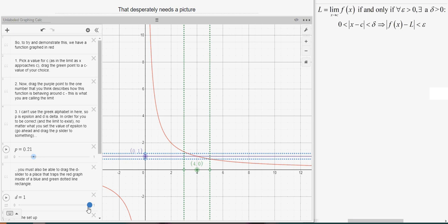If I have this epsilon, I can set this delta so that the graph of the function is contained within this little rectangle that we've got in there.